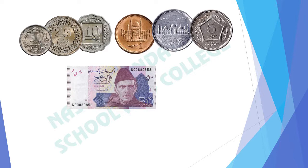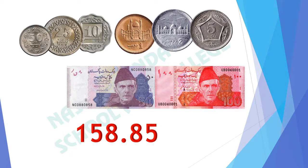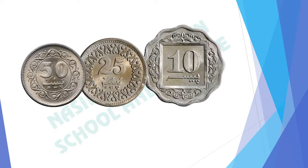This shows 50 rupees, and this shows 100 rupees. If we add all of them, we get 158 rupees and 85 Paisas. We can see that the amount of Paisas is written as a decimal value, as it is the smaller unit of rupee. Note that the 50 Paisa, 25 Paisa, and 10 Paisa coins are not in use anymore.